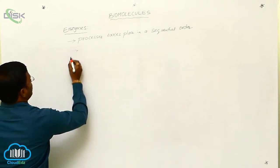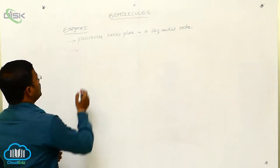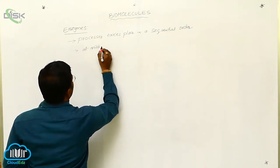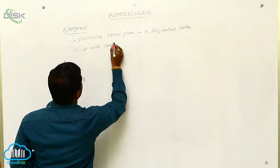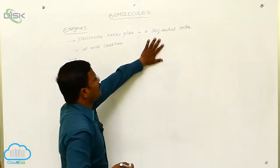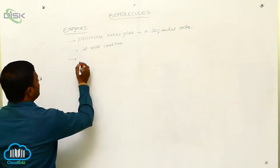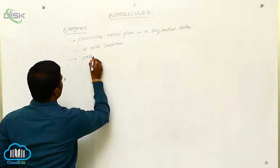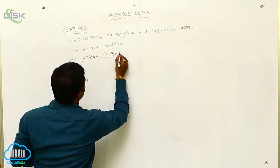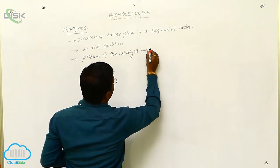All the chemical reactions and biosynthetic processes which take place in the living organism body at mild conditions occur in a sequential order. All these sequential chemical reactions in any bioprocess take place in the presence of biocatalysts named as enzymes.